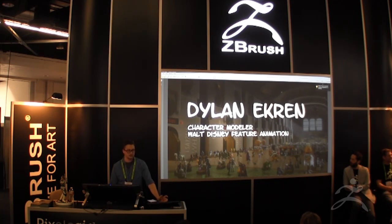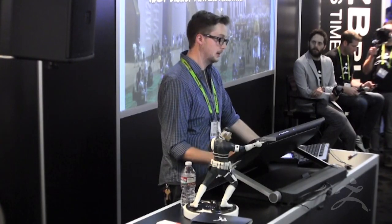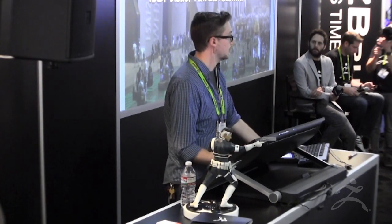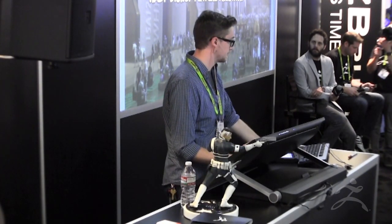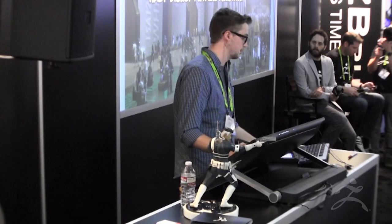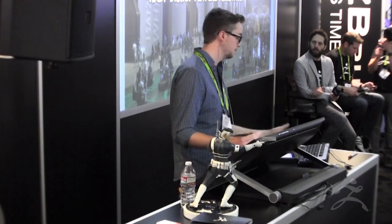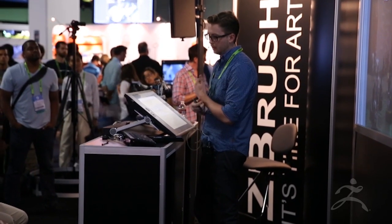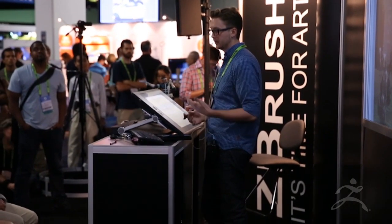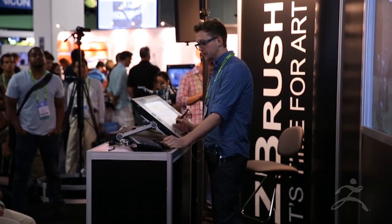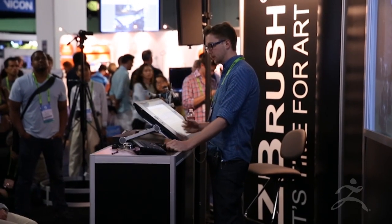I got into Disney through their talent development program, which Zach talked about just a little bit. I think it's a great way to get into a studio. You get to work on actual production and get a lot of feedback from all the talented artists there. It's just a great way to learn and really grow — and be able to bug people and blame it on being a trainee. I worked on Prep and Landing, and my first model ever on film was a napkin. Then I worked on Wreck-It Ralph, Frozen, and I'm currently on Big Hero 6.